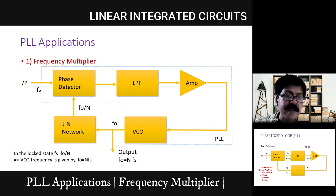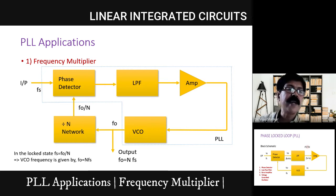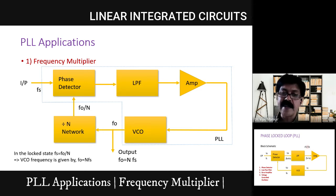If I use a mod-8 network, I get fo/8. If it is a mod-4, I get fo/4 at the output. The PLL has the property that it tries to track the frequency of the input signal and after a while the system is locked, and both frequencies become equal. Here the VCO output is divided by N, so I get fo/N. Once the PLL is locked, these two frequencies will be equal, so FS equals fo/N.